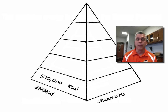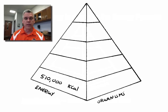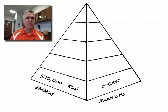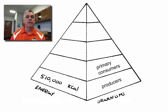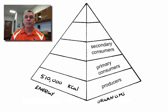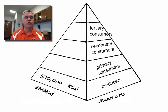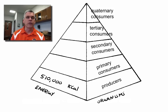Let's write some organism names on this energy pyramid. At the very bottom, at that lowest trophic level, these are the producers — all the autotrophs that capture sunlight and make food. Organisms that eat producers are called primary consumers, which include herbivores and omnivores. Any organism that eats a primary consumer is called a secondary consumer — carnivores or omnivores. If an organism gets its energy from a secondary consumer, it is a tertiary consumer, and if it gets energy from a tertiary consumer, it is a quaternary consumer.